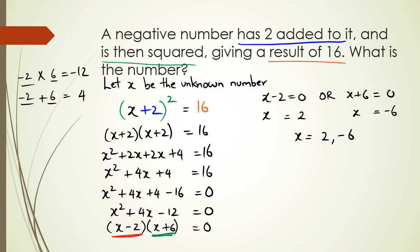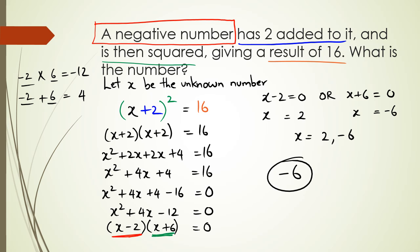We actually have two answers: x = 2 and x = -6. To fully answer this question, we need to go back to the question itself, which specifies a negative number. So the correct answer is negative 6 — even though we have both a positive and negative answer, the question is asking specifically for the negative number.